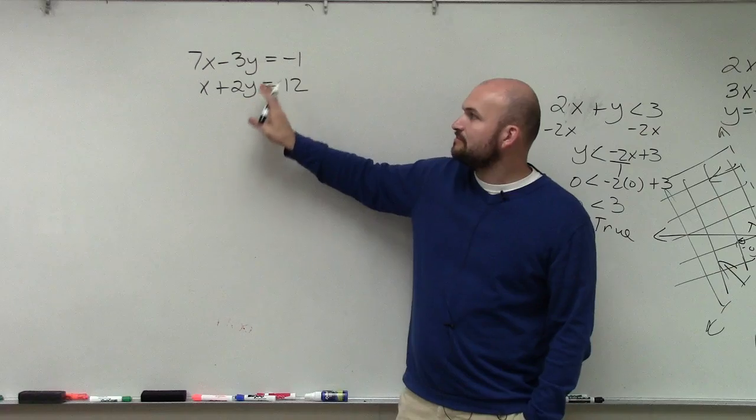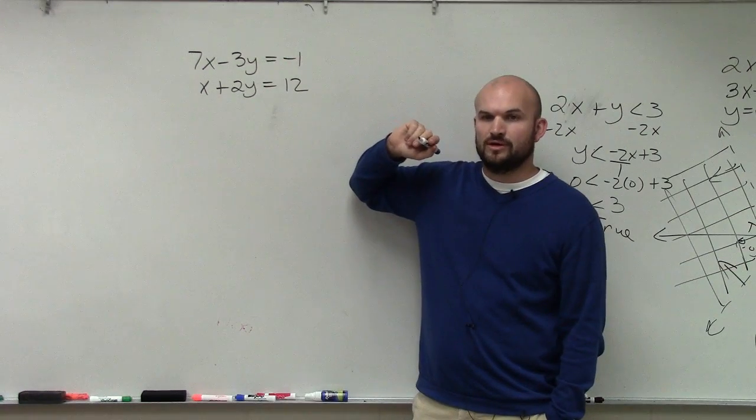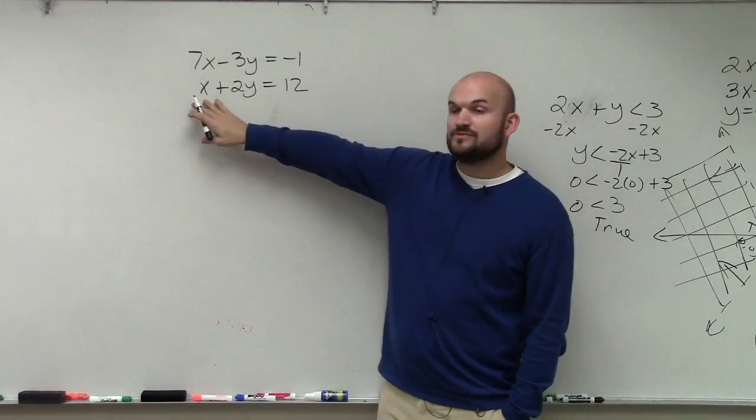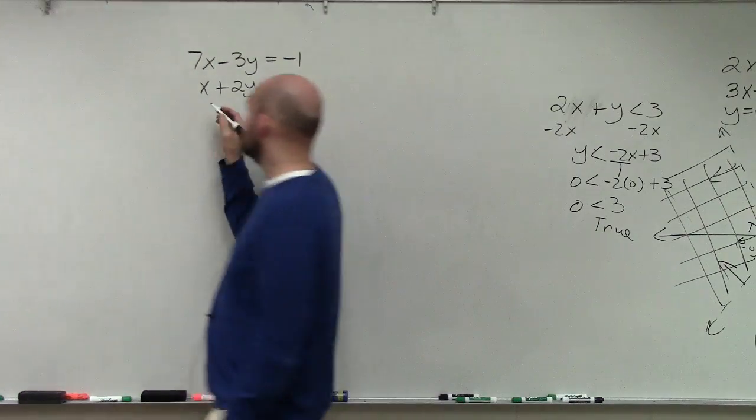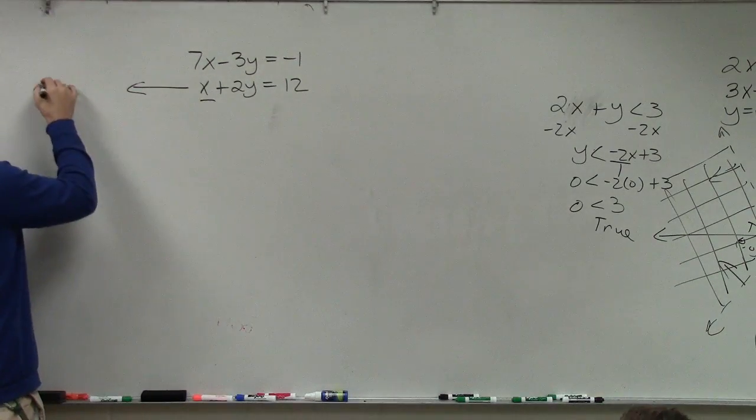So Jacob, which of my variables has a coefficient of 1 or negative 1? This x right here, right? So what I'm going to do is I am going to solve for that x.